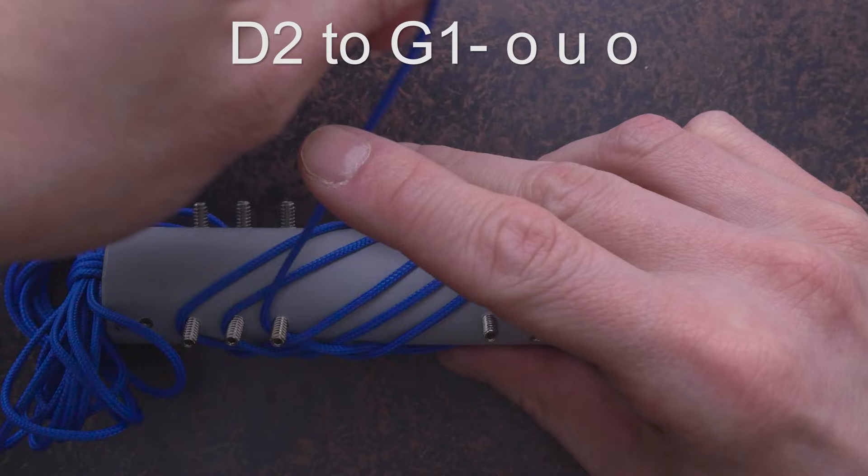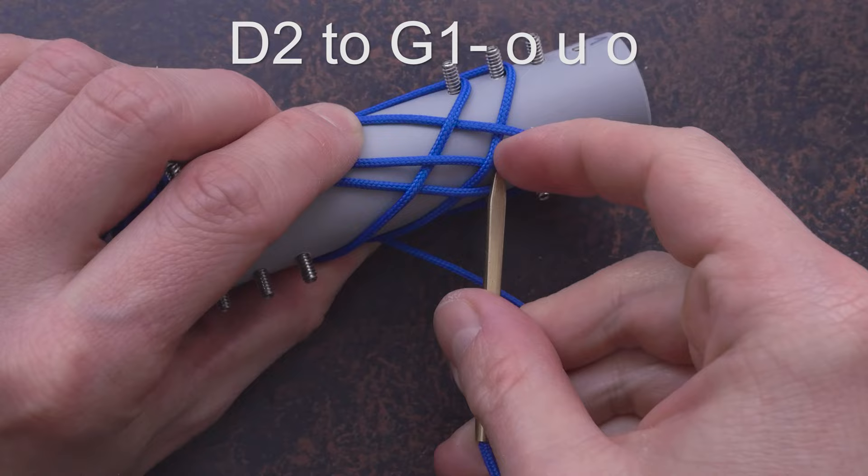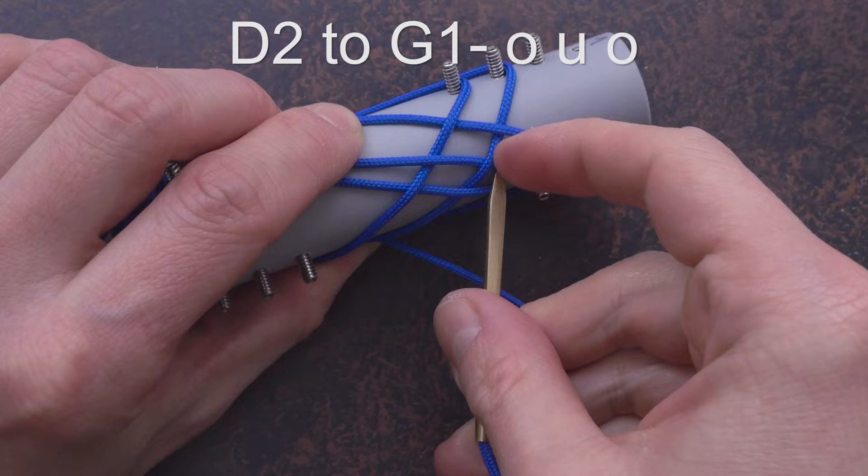From D2, we move to G1, going over, under, over.